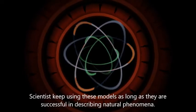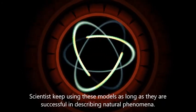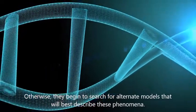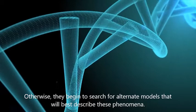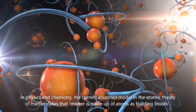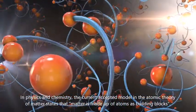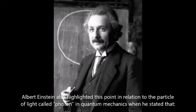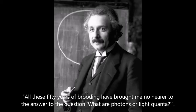Scientists keep using these models as long as they are successful in describing natural phenomena. Otherwise, they begin to search for alternate models that will best describe these phenomena. In physics and chemistry, the current accepted model in the atomic theory of matter states that matter is made up of atoms as building blocks. Albert Einstein also highlighted this point in relation to the particle of light called photon in quantum mechanics when he stated that all these 50 years of brooding have brought me no nearer to the answer to the question what are photons, or light quanta?